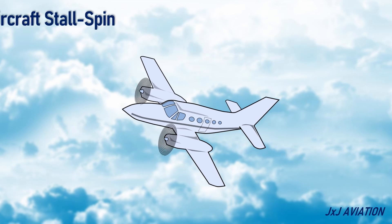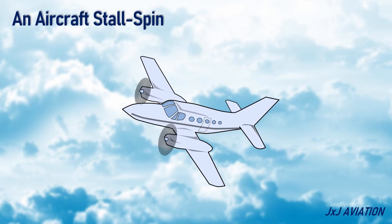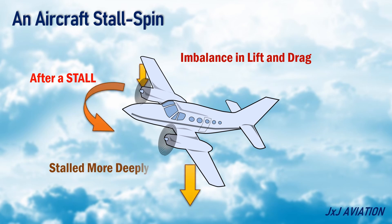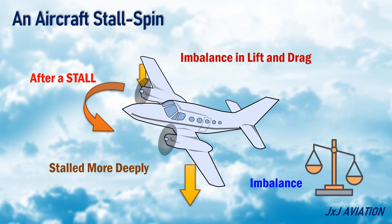An aircraft stall spin. This occurs if there is an imbalance in the lift and drag forces between the wings after an aircraft has stalled. In other words, one wing has stalled more deeply than the other wing, which caused the imbalance in the lift and the drag.